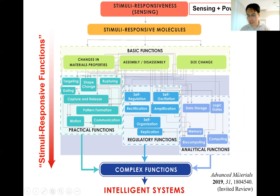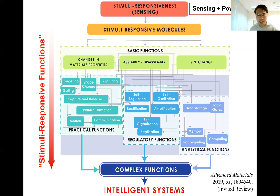We have previously published a review article where we discuss the use of stimuli-responsive materials for constructing intelligent materials. Stimuli-responsive materials are used because they are able to sense the signals from the surrounding environment, and they can also use the stimulus as the power for driving the operations and functions of these materials. After reviewing the many different types of functions developed from stimuli-responsive materials from many different research groups across the world, we now see that there are many different types of functions being developed.